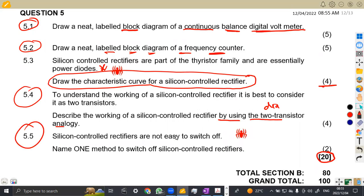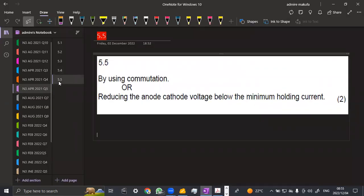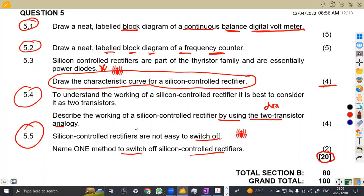5.5, silicon-controlled rectifiers are not easy to switch off. Name one method to switch off silicon-controlled rectifiers. Why are they not easy to switch off? Anyways, we want the methods we can use in terms of switching off. By using commutation, you can switch off your silicon-controlled rectifier, or reducing the anode cathode voltage below the minimum holding current. Remember we said those collectors will be having enough current to switch on. So if we can reduce the current to a minimum holding current, then it can actually or automatically switch off. That's what we had from this part of the question.